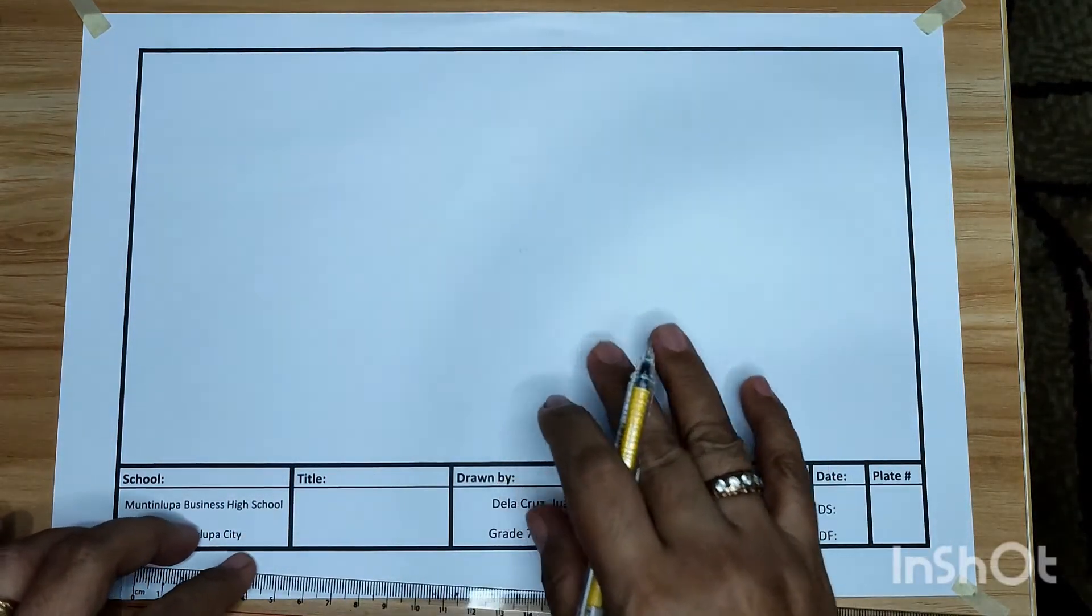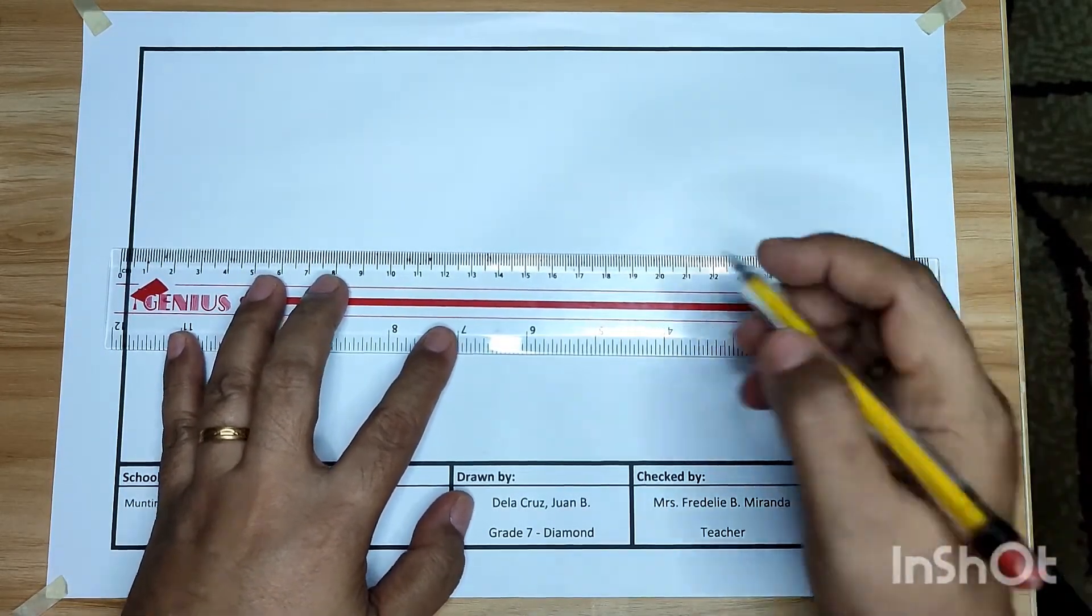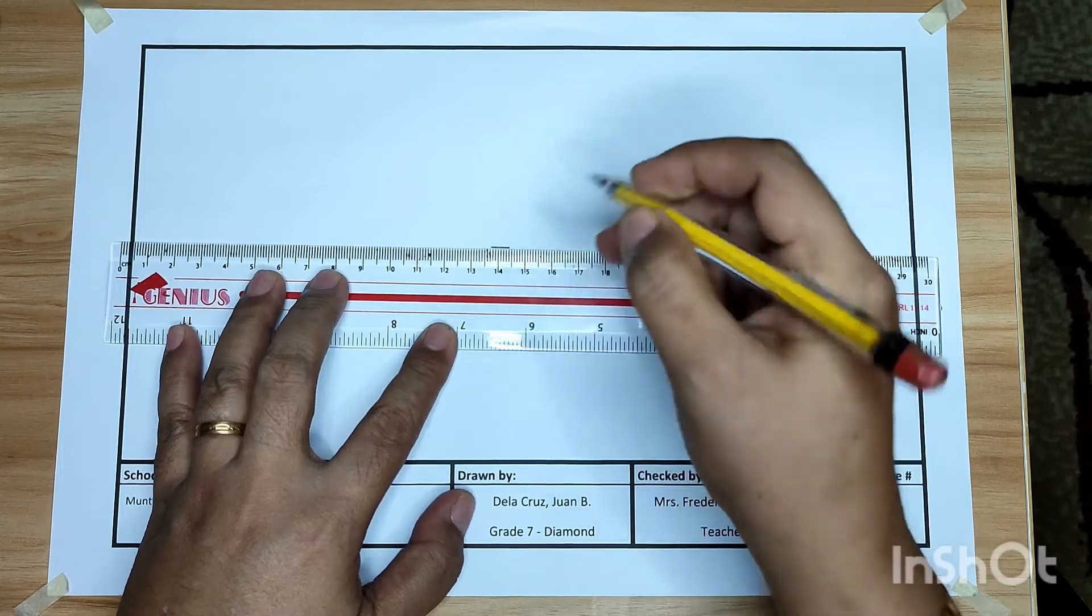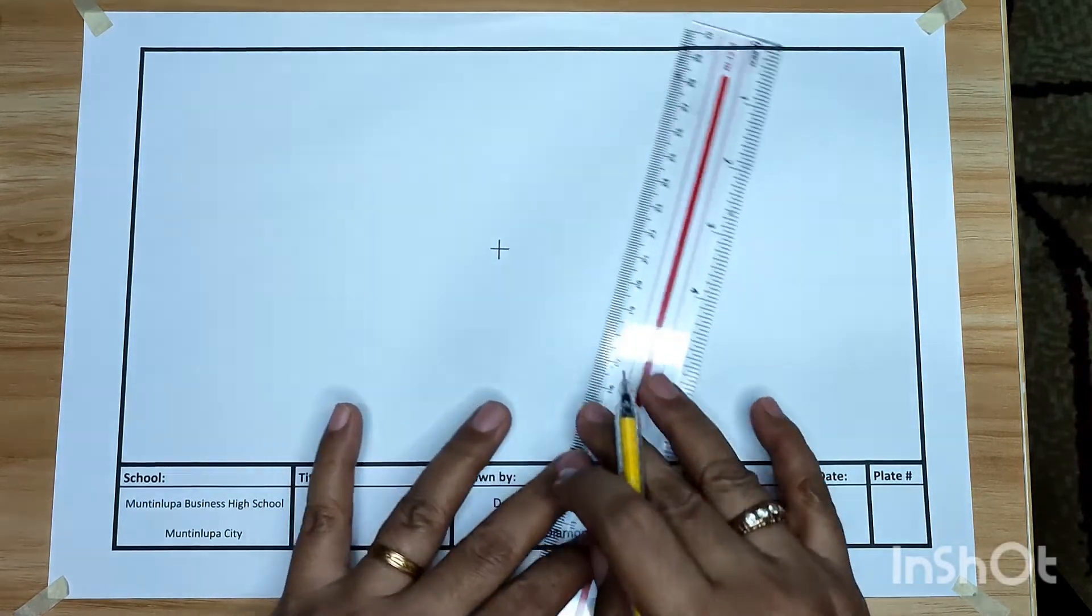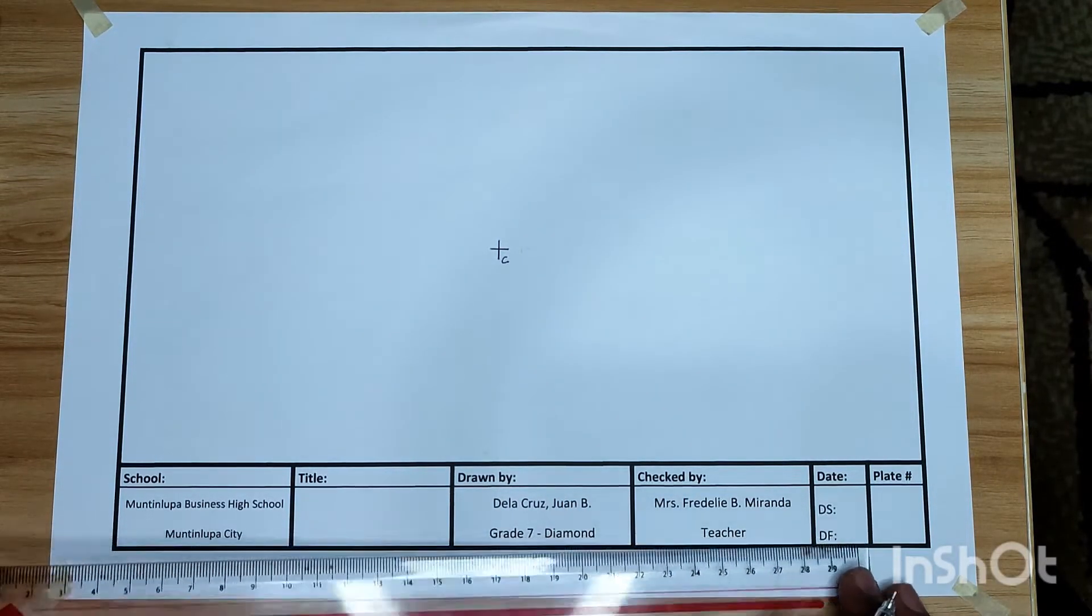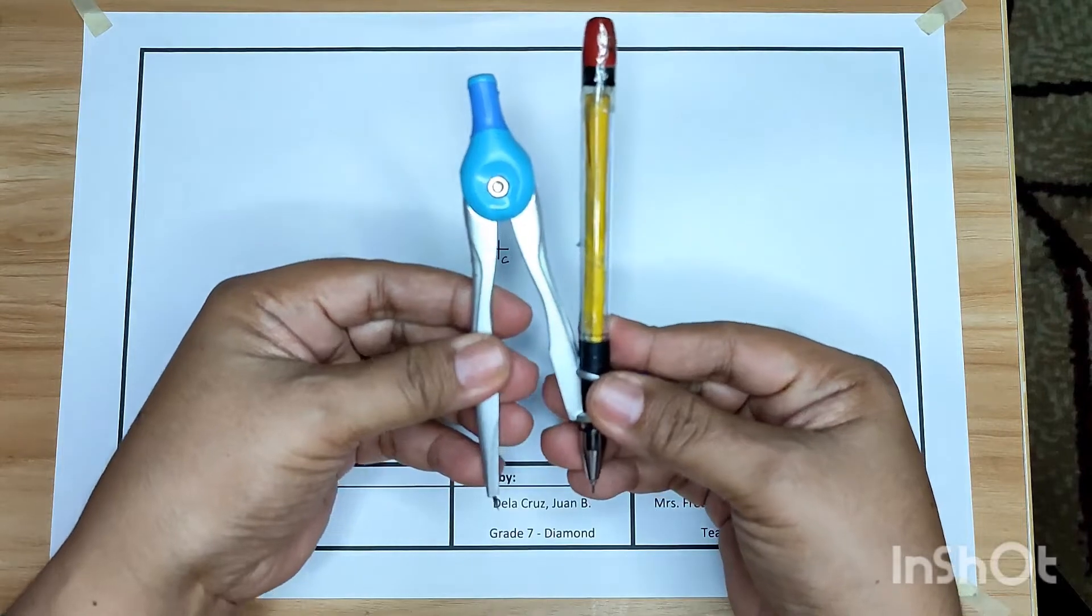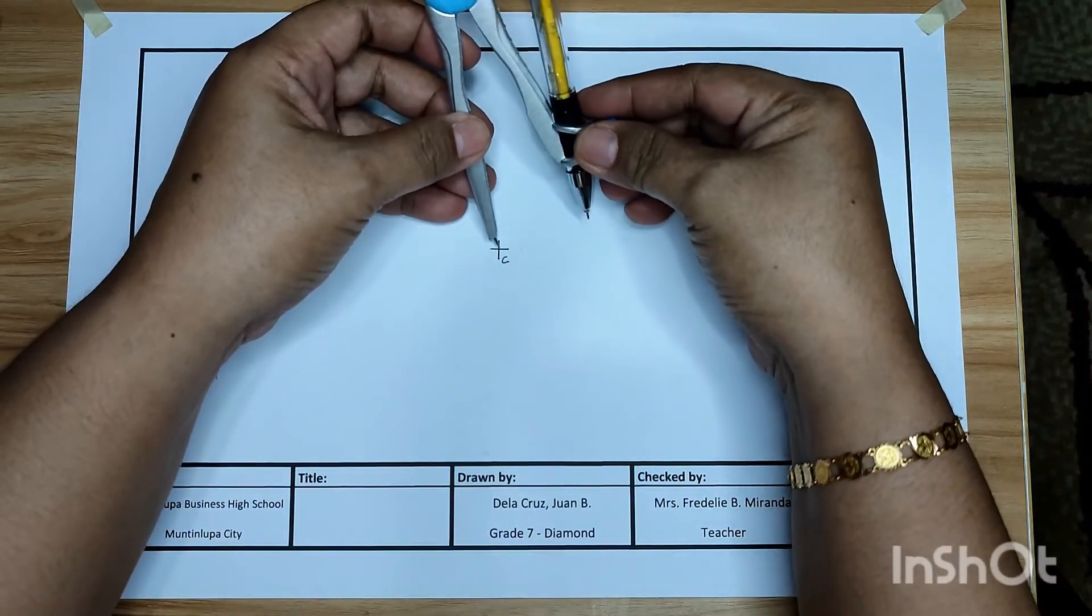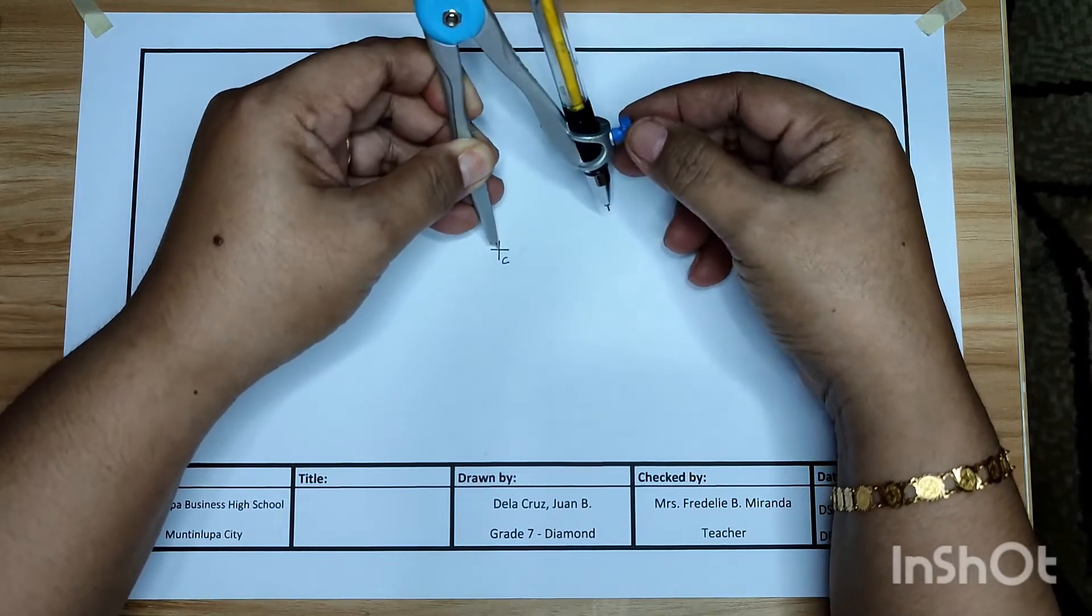Approximately at the center of our drawing paper, draw a small cross. Name this point C. Then get your compass. Adjust your compass at any radius. Set your compass at point C, and draw a circle.